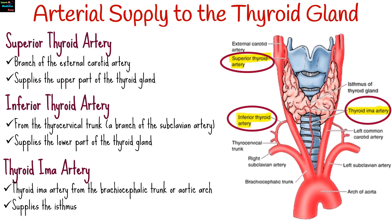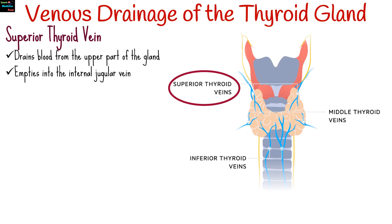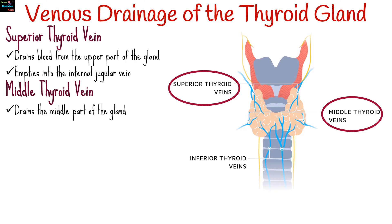The venous drainage of the thyroid gland includes the superior thyroid vein, which drains blood from the upper part of the gland and empties into the internal jugular vein. The middle thyroid vein drains the middle part of the gland and also empties into the internal jugular vein.